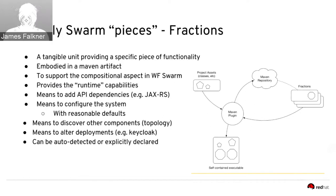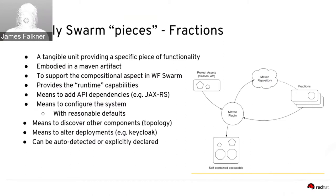WildFly Swarm packages just enough of the app server components needed to run your application. These components are packaged into what we call fractions — small units of functionality. You declare the fractions you need, or let WildFly Swarm auto-detect them based on your source code. It then packages everything into a single runnable fat jar or uber jar, making it a very small runtime easily deployable to a container orchestration platform like OpenShift.